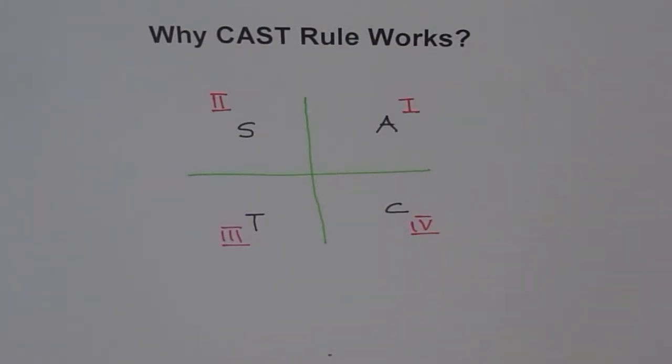So for us, the letters are same, but we start from quadrant 1: A, S, T, C, all silver tea cup. Well, if that looks familiar and good enough for you, you can remember that as your rule to figure out which trigonometric function is positive in which quadrant.